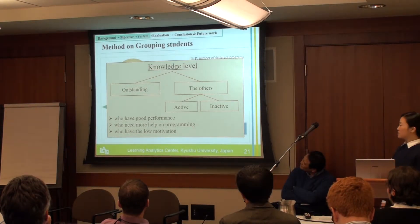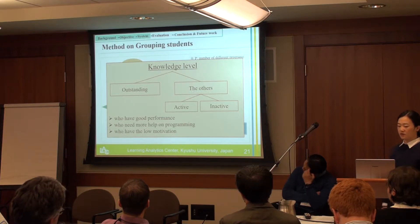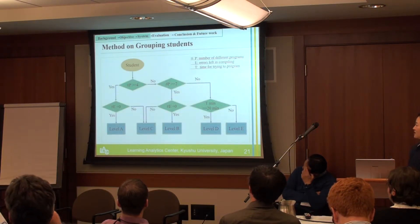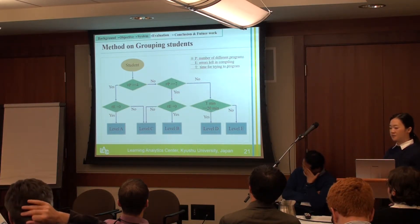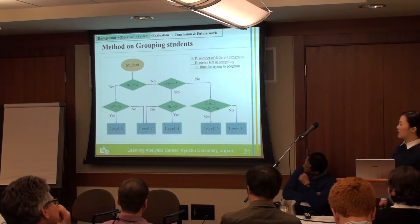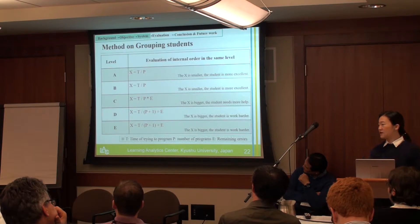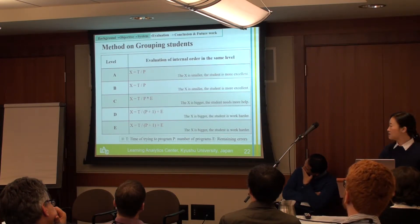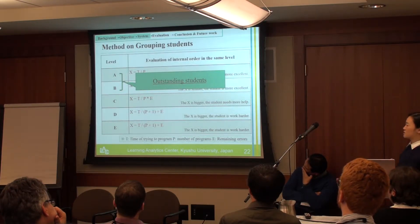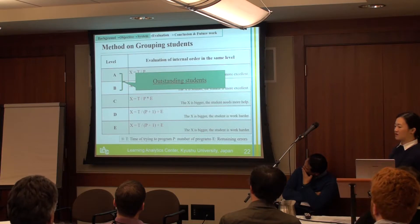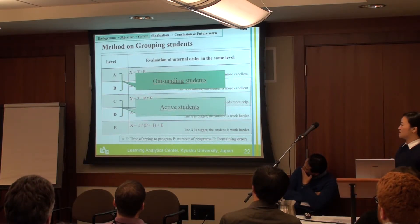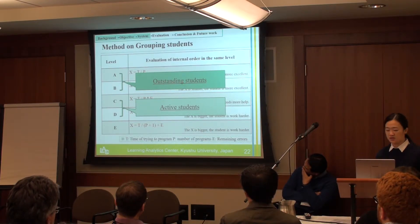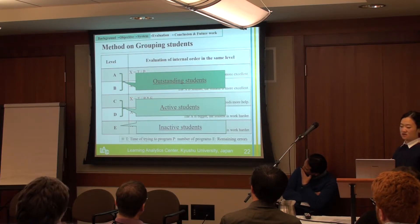To address these different student types, we group students into different knowledge levels to help tutors provide more accurate and faster support. The method is based on: how many exercises students complete, how long students try to program, and whether they can modify all errors. Students are ordered from high to low performance. Levels A and B are outstanding students who finish most programs without errors left. Levels C and D are active students who try to program for a long time but have errors they can't fix. Some students with no or few actions are the inactive students.